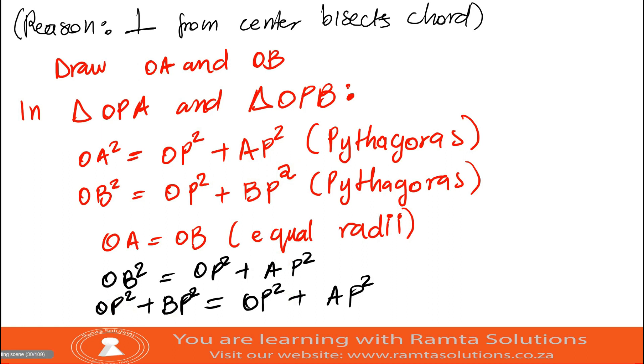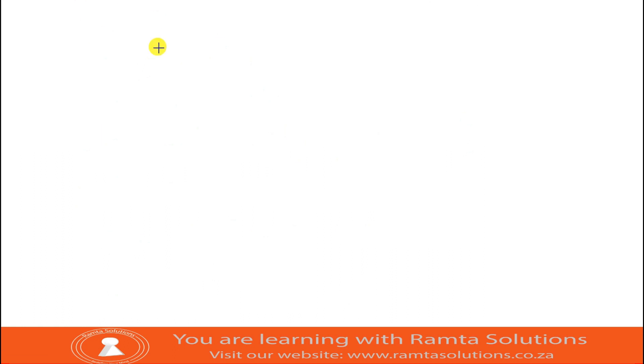So what do we say? We can therefore say BP squared equals AP squared.